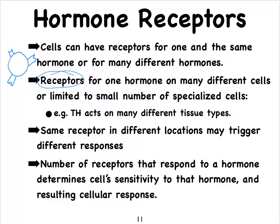Thyroid hormone — and there are two different kinds of thyroid hormone — can act on many, many different tissue types. Thyroid hormone influences your metabolic rate and therefore can bind to many different cell types across the body. How many receptors are present on a cell and respond to the binding of a hormone determines the cell's sensitivity to that hormone. The more hormones bind to more receptors on a cell, the more sensitive the cell is, and therefore we're going to have a stronger cellular response.